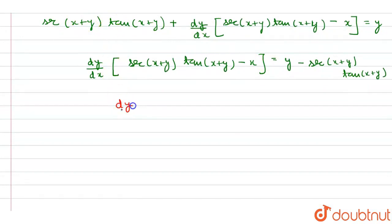dy by dx equals y minus sec of x plus y times tan of x plus y divided by sec of x plus y times tan of x plus y minus x.